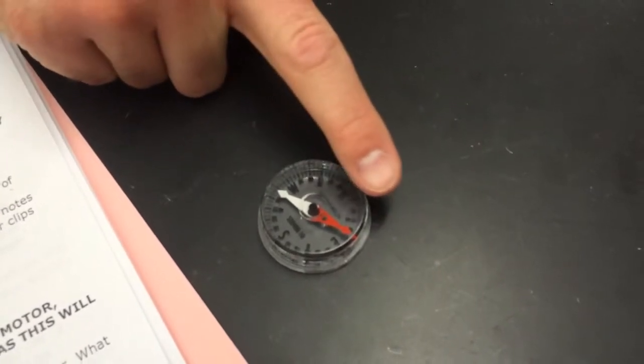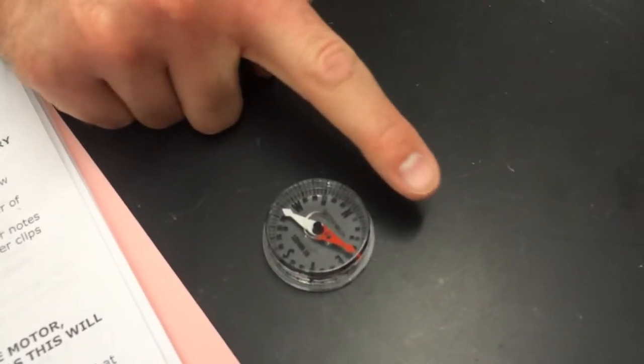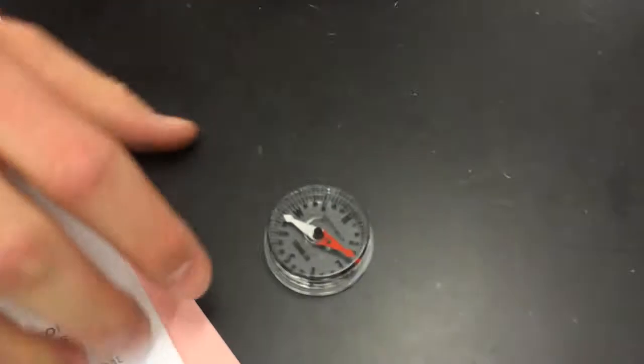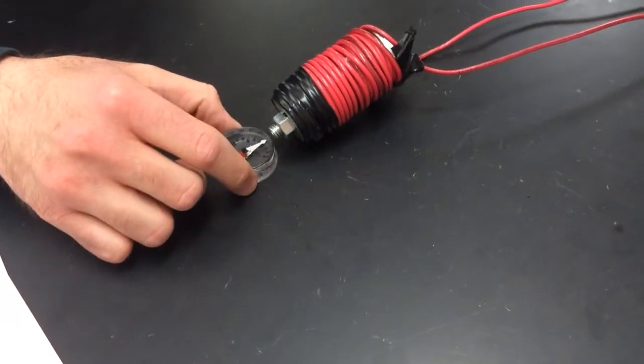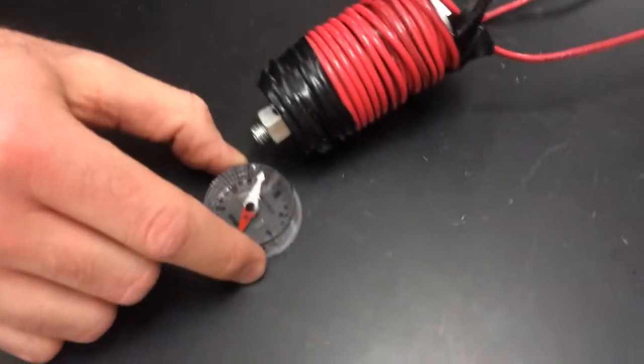Right now that's pointed north to the North Geographic pole. What we're going to do is bring this over by our magnet and close the switch. Check this out - do you see how that is really attracted right there?